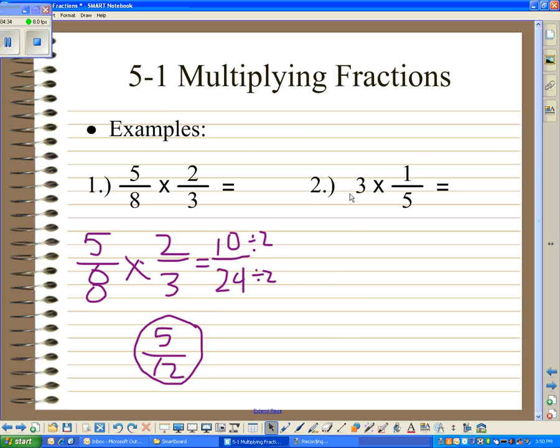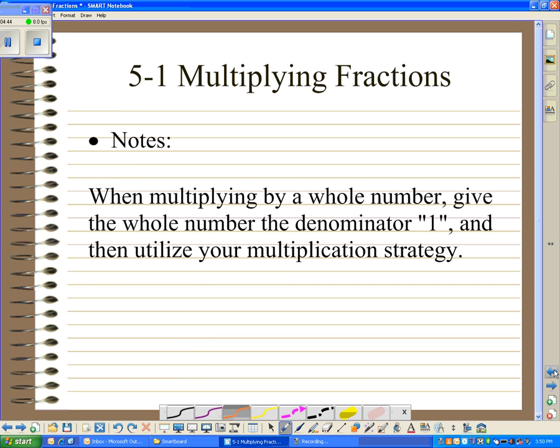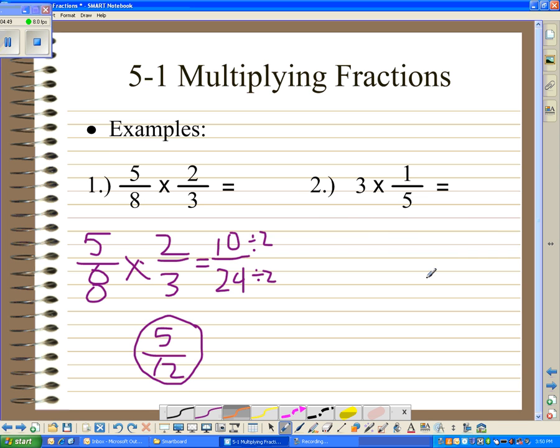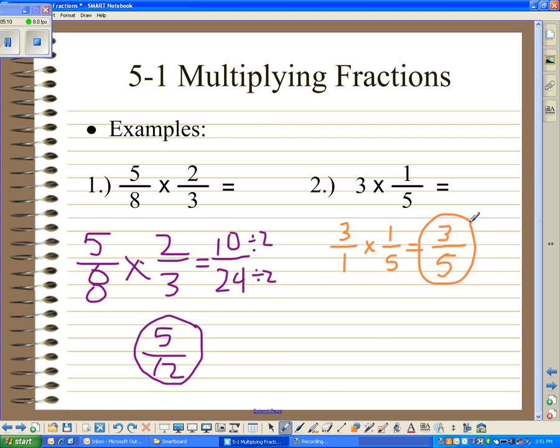The second problem, number two, is a little bit different because in the second problem, we have a whole number. And if we remember from the previous page, when multiplying by a whole number, give the whole number the denominator one and then utilize the multiplication strategy. So we're going to rewrite this problem. And instead of three, we're going to write 3/1. We're going to multiply that by 1/5. And now we'll multiply numerator times numerator, and that'll give us three. Denominator times denominator, and that'll give us five. And 3/5 is already in simplest form, so our solution in the second example is 3/5.